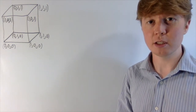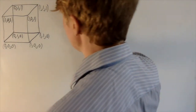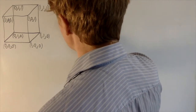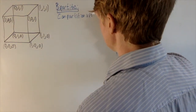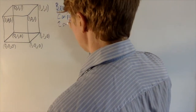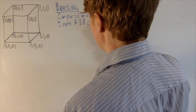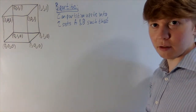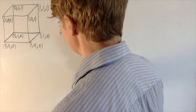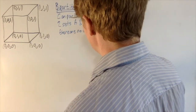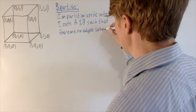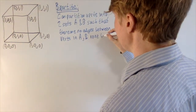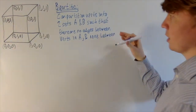A graph is a collection of vertices which can be joined together by edges. A bipartite graph is a special type of graph where you can split up all your vertices into two disjoint sets. You can partition the vertices into two sets A and B, such that there are no edges connecting any two vertices in A, and no edges connecting any two vertices in B. But of course you can have edges between a vertex in A and a vertex in B.